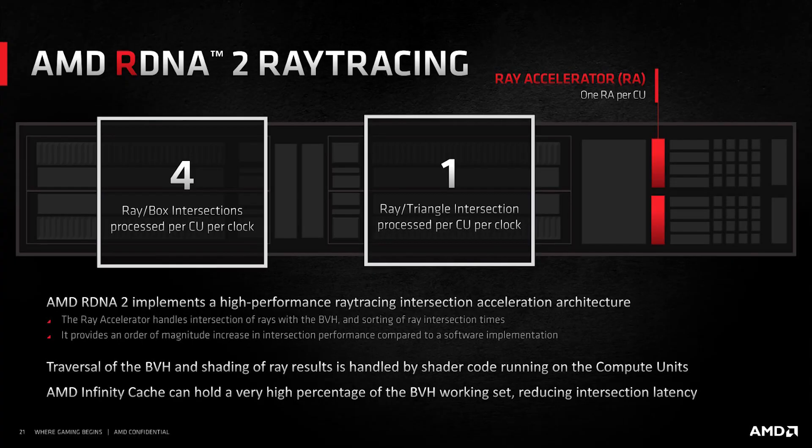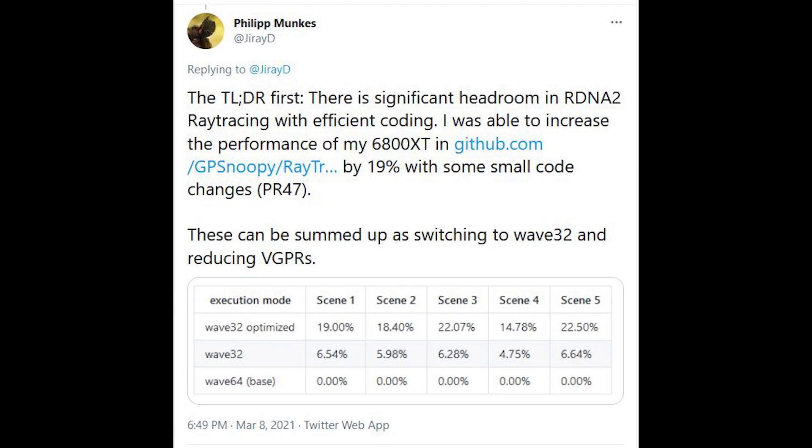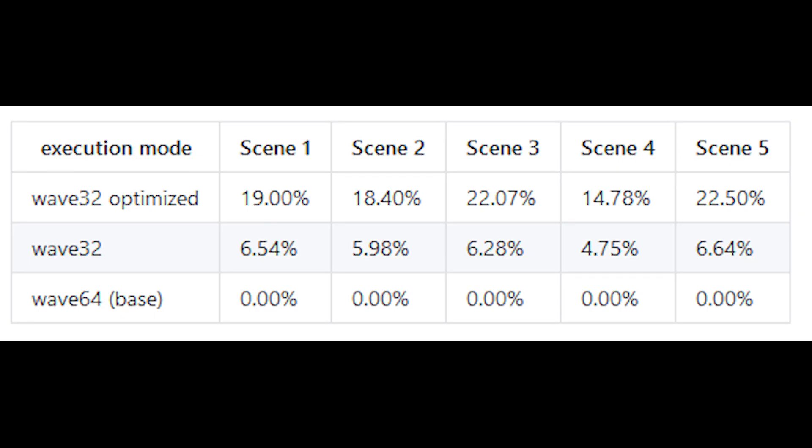Anyway, getting back to the point — with the ray tracing implementation of RDNA 2, what we can see is a drastic uptick in performance if we change the way that waves are issued on the GPU, and also better implementation of VGPRs — or rather, they are utilized more efficiently. That's a better way to say that. And this was discussed by Philip on Twitter.